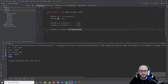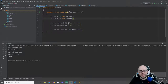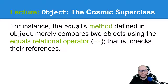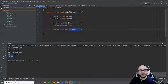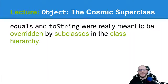If P2 is a new Person again, are those things equal? False. If this just does what the equals relational operator does, then why does it exist? We'll talk about that a little bit later. Equals and toString were really meant to be overridden by subclasses in the class hierarchy. This thing exists, but it's meant to be overridden. Why even have it at all? The toString has a similar story.